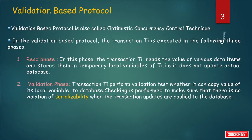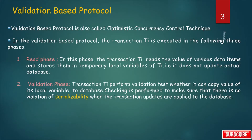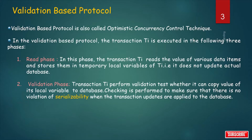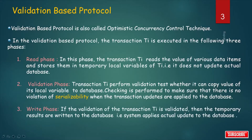What is serializability? Serializability is a concurrency scheme where the concurrent transaction is equivalent to one that executes the transactions serially. So checking is performed to make sure whether serializability is maintained or not. If serializability is maintained, then updates are applied to the database. The last phase is the write phase, where after validation of TI, the temporary results are written to the database — that is, the system applies the actual update to the database.